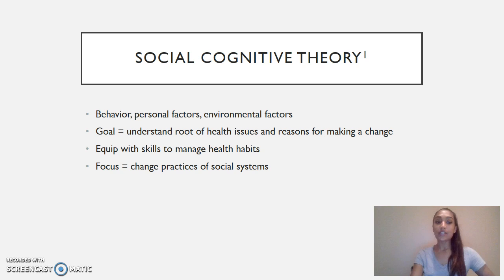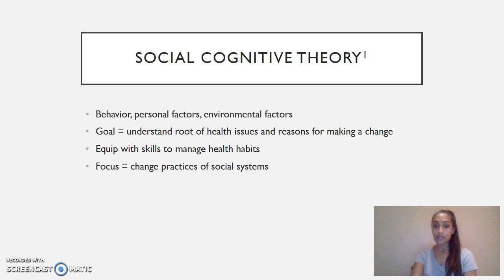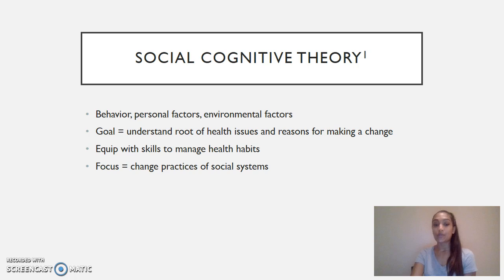Social cognitive theory can be used as an effective approach to influence healthful behavior. It examines behavior, personal factors, as well as environmental factors that may drive health habits. The goal is to help individuals understand the root of their health issues and their reasons for making change. This theory can be appreciated for equipping individuals with the skills to manage their own health habits, and a huge part of it is to help clients practice autonomy.